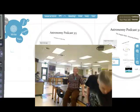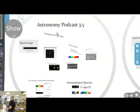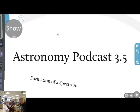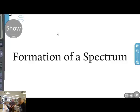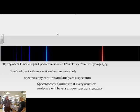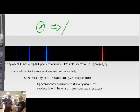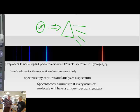Today we want to do some stuff on spectrums - we want to talk about the formation of spectrums and what spectrums are. The idea is this: you've got light coming from some source, say the Sun, and we're going to put it through a prism to break it into its colors. You would think it should look like a rainbow.